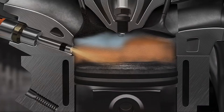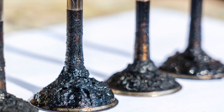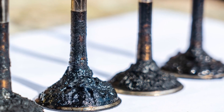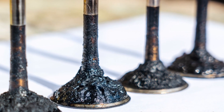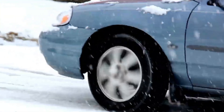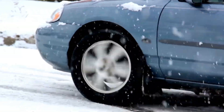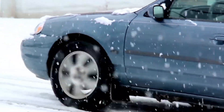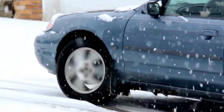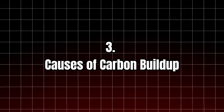A common test is to remove the intake manifold and look directly at the intake valves. If they're covered in a thick layer of carbon buildup, you know you've got a problem. A carbon-coated valve can prevent the engine from sealing properly, causing a loss of compression and poor engine performance.